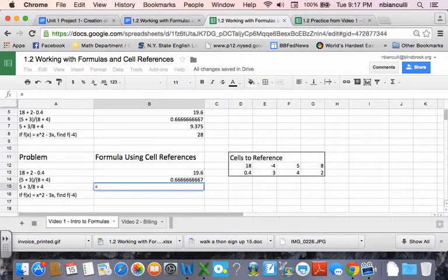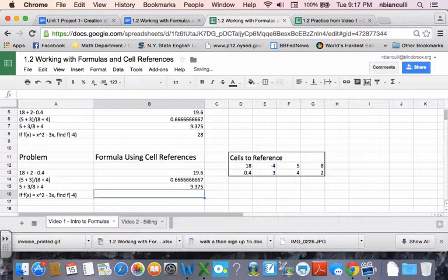And now I'll do it the same for this problem, 5 plus, here I would need to do 3 divided by 8 plus 4. And I get my 9.375.